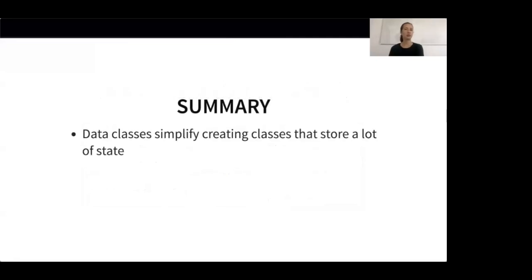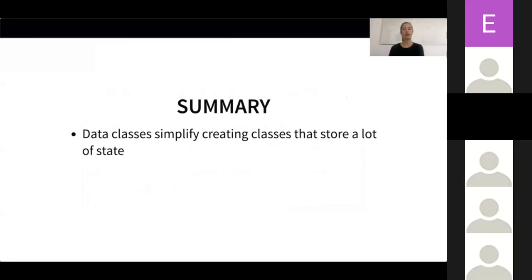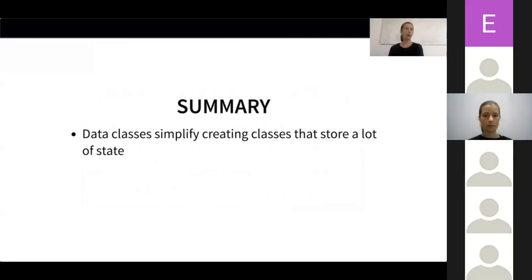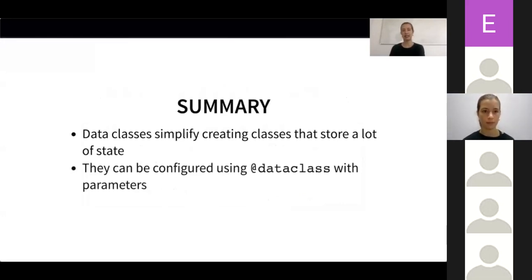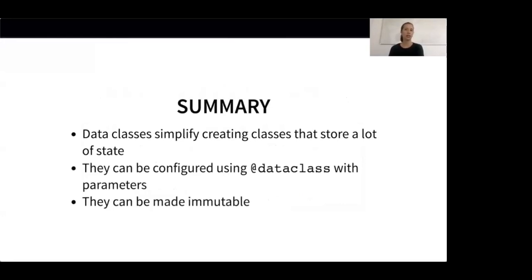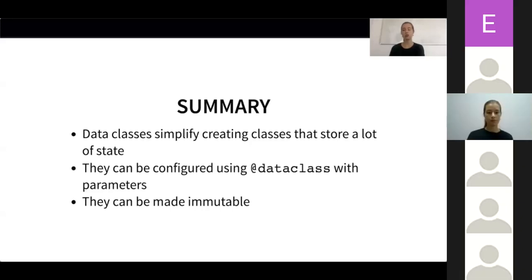Let's sum up what we learned. Data classes are a great tool for creating classes that store a lot of state in the form of attributes rather than methods. Data classes automatically create many useful methods for us, such that we don't have to write them ourselves. We learned that data classes can be configured during creation by providing parameters to the @dataclass decorator. One example is the frozen attribute, which allows us to create immutable data classes. If you want to know more about data classes, consider looking at PEP 557, which introduced data classes, or watch one of the many PyCon talks on this topic.